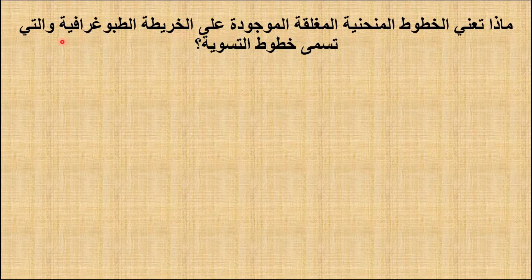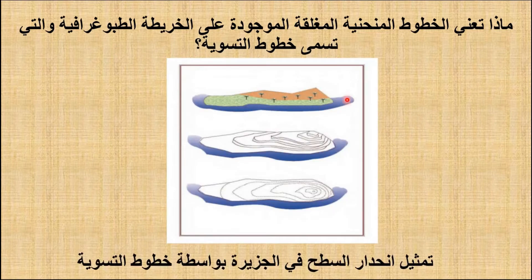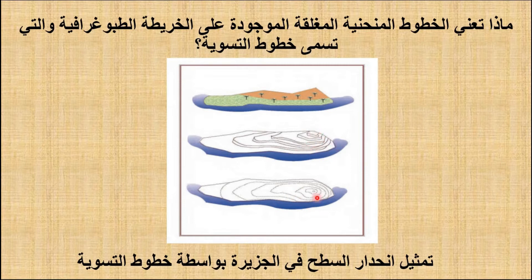ماذا تعني الخطوط المنحنية المغلقة الموجودة على الخريطة الطبغرافية والتي تسمى خطوط التسوية؟ لنلاحظ هنا لدينا هذا البحر وسطح الأرض ومجموعة من الأشجار. يتضح أن سطح الأرض مرتفع شيئاً فشيئاً، وعلى الخريطة الطبغرافية يبين سطح الأرض على شكل خطوط مغلقة تسمى خطوط التسوية. ويمثل انحدار السطح على الخريطة الطبغرافية بواسطة خطوط التسوية.